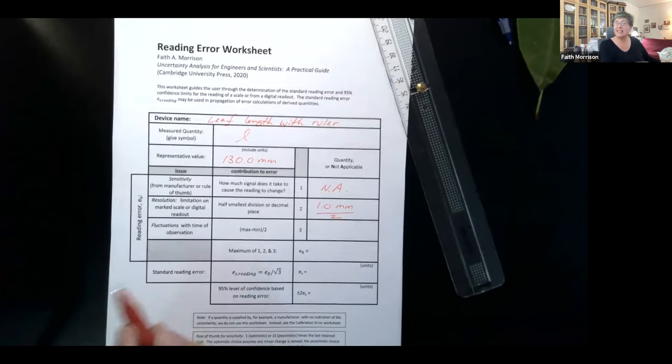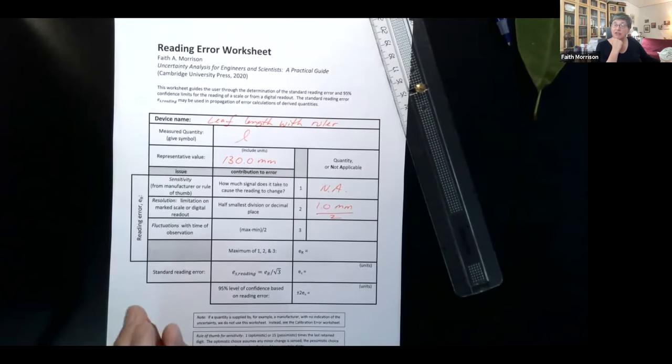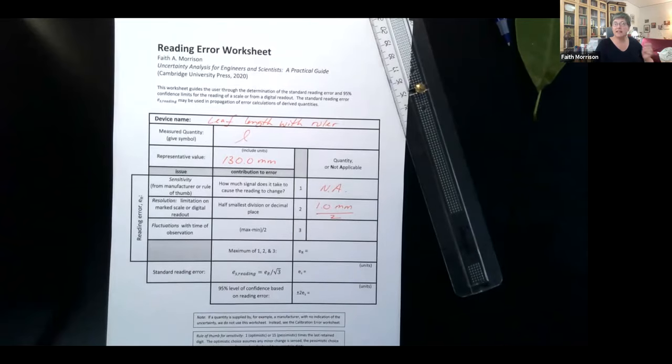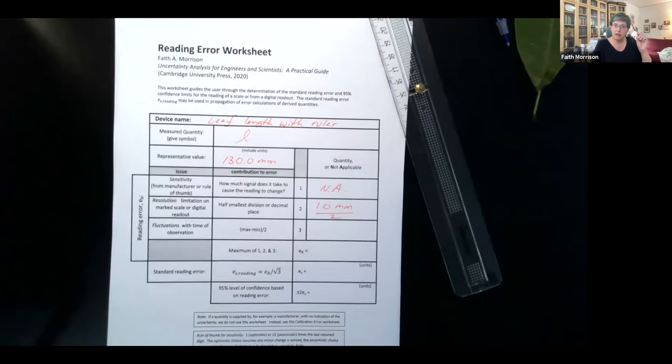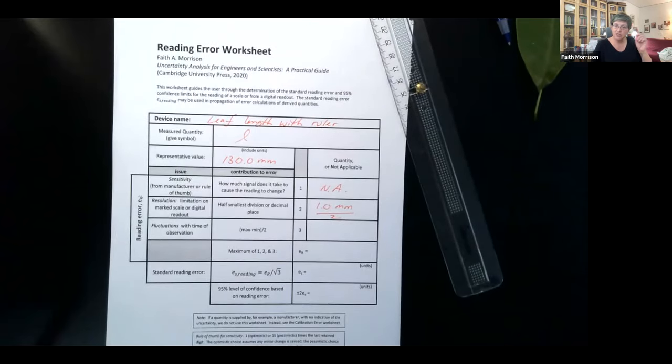And then a third issue that's dealing with the reading is fluctuations. So for those of us who've used analog devices, we're used to seeing maybe a little needle on the device that sort of chatters. It's just maybe your speedometer on your car would sometimes chatter. So if you have a device, a pressure gauge or something with a needle on it, it can easily chatter.